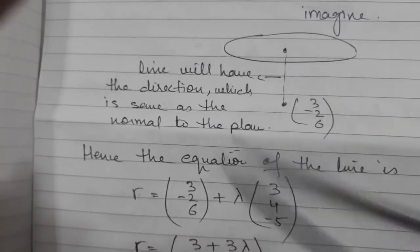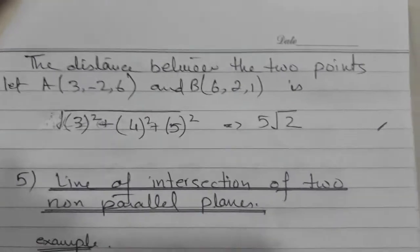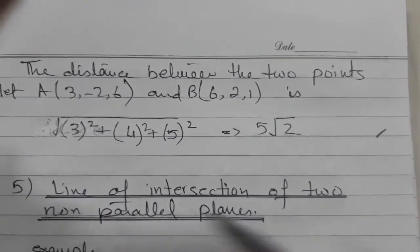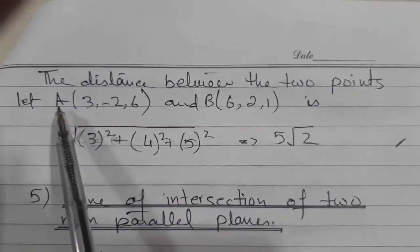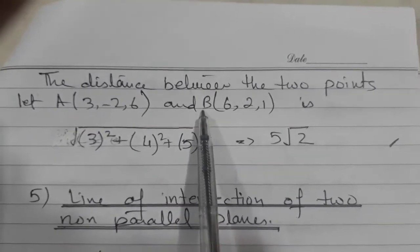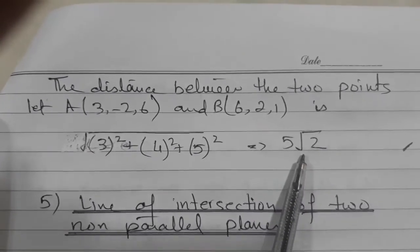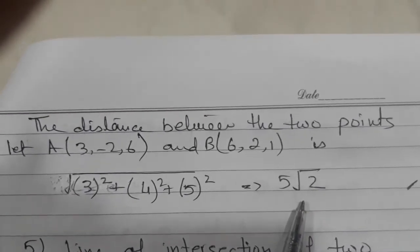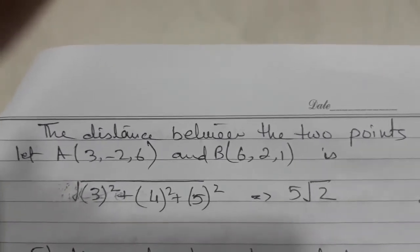Now we have two points, and we can apply the distance formula between them easily. Or we can also find out vector AB like OB minus OA and apply magnitude, which will give us the distance between the plane and the point.